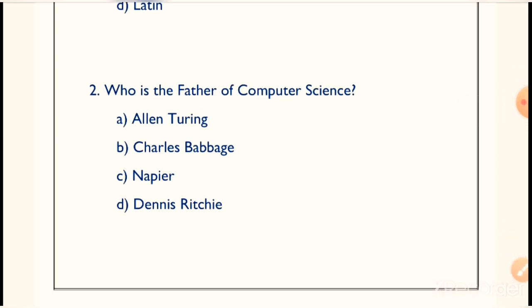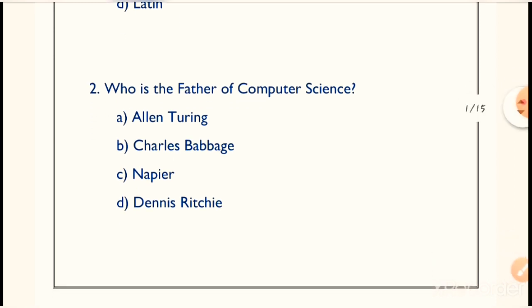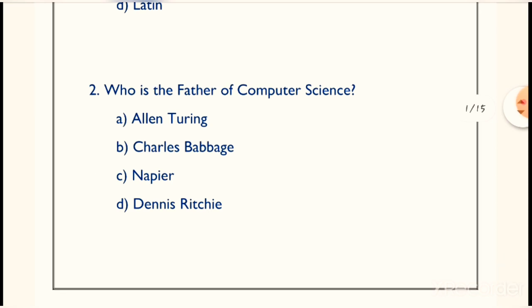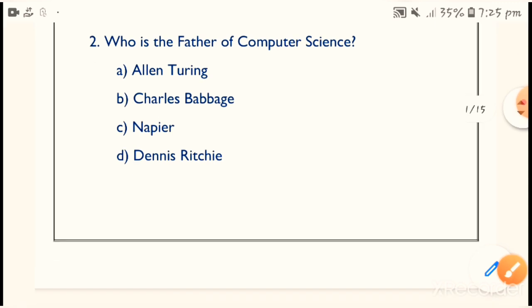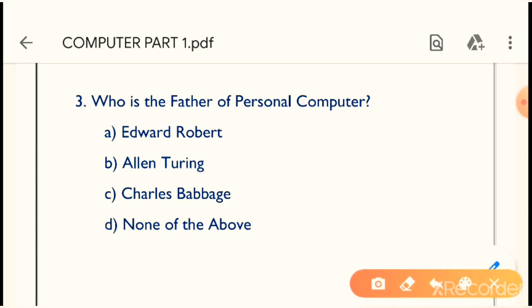Question number 2: Who is the father of computer science? The question asks who is the father of computer science. Option B is the correct answer — Charles Babbage is the father of computer science, or computer.